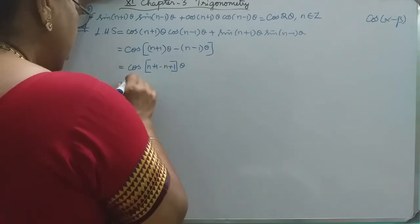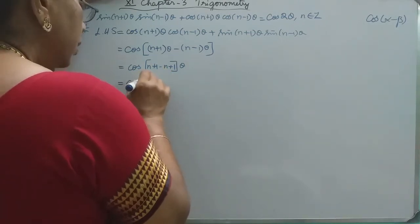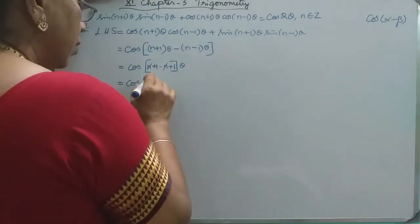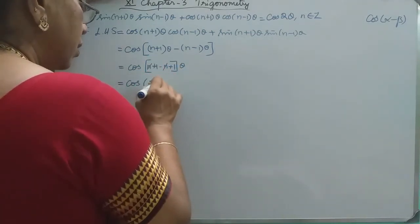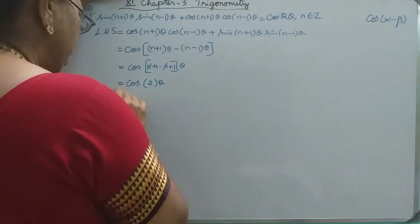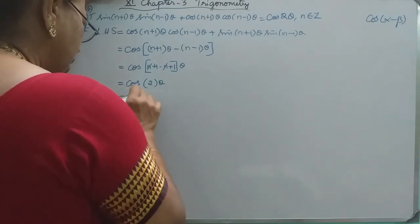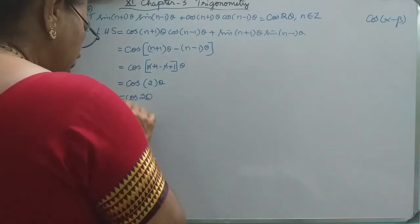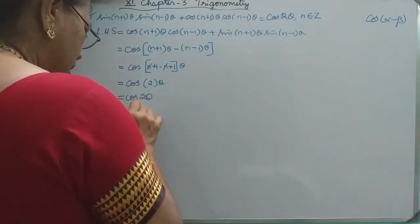So that is nothing but cos of (n-1)θ... that is nothing but cos θ. That is equal to RHS.